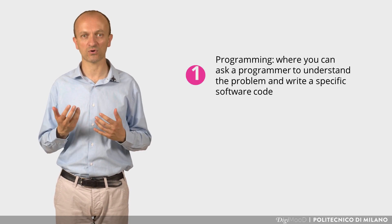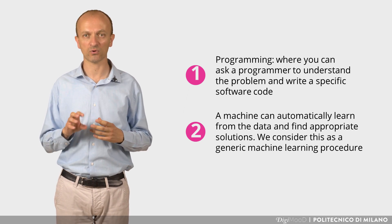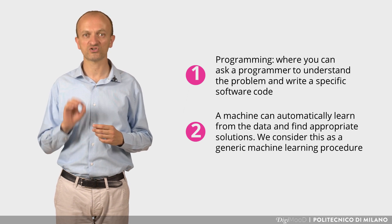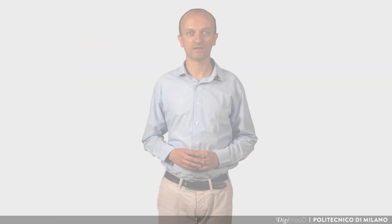A question may arise about what we are trying to solve here. More precisely, when we have an analysis to run over the data, why shouldn't we just ask a software developer to write a specific program to solve it? Indeed, when you have a problem and you want to solve it, you have two options. Programming, where you can ask a programmer to understand the problem and write a specific software code. Or you hope that a machine can automatically learn from the data and find appropriate solutions. We consider this as a generic machine learning procedure and declare the problem in a way that the solution can be found following such a generic procedure. For simple and well codified problems, programming is often the most effective and efficient approach. But when the problem becomes complex, implies blurred or flexible problem settings, or involves very complex data structures, the machine learning way may become the only viable option.